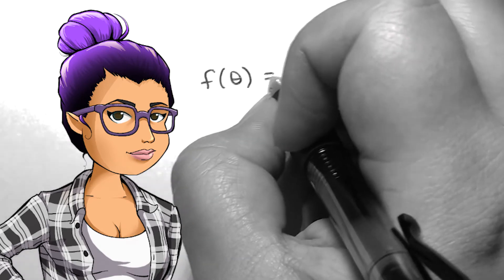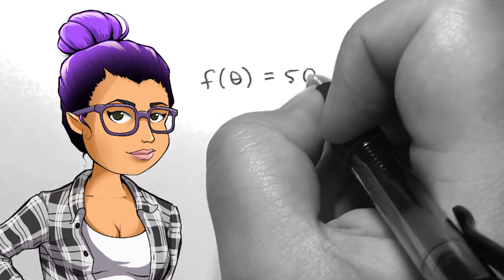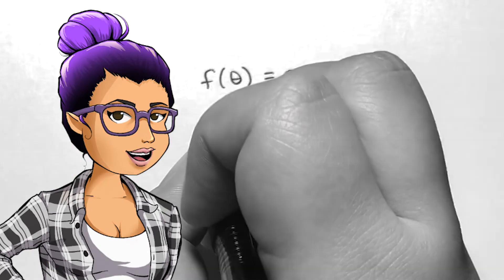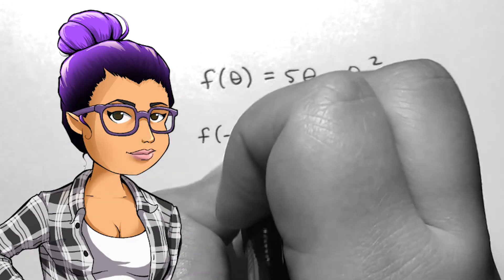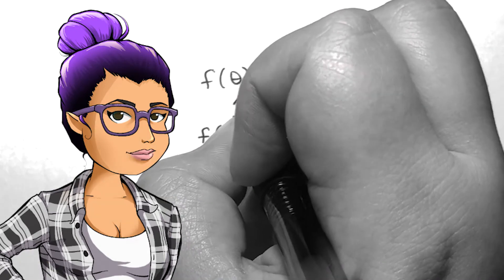Say I'm given f of theta equals 5 times theta minus theta squared. I'm supposed to find f of negative 3. The negative 3 has replaced theta in my function notation,